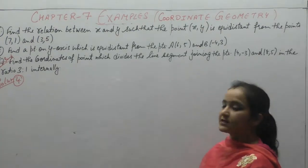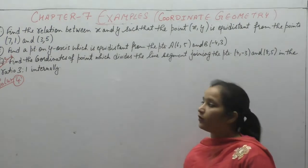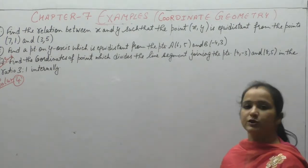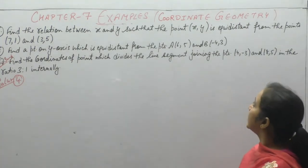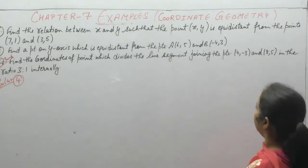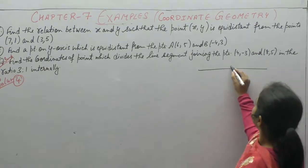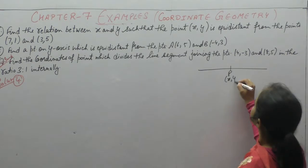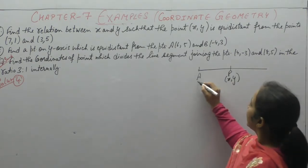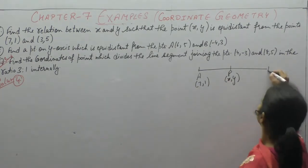Now next example start. Example number 4. Find the relation between x and y such that the point (x,y) is equidistant from the points (7,1) and (3,5).